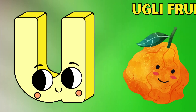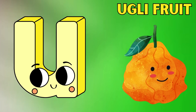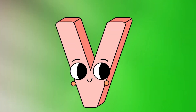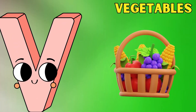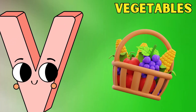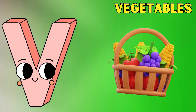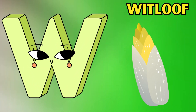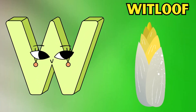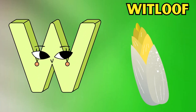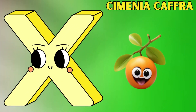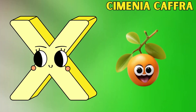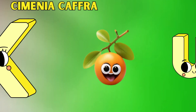U is for ugly fruit — uh, uh, ugly fruit. V is for vegetables — vh, vh, vegetables. W is for whitloaf — wuh, wuh, whitloaf. X is for ximenia caff — zh, zh, ximenia caff.